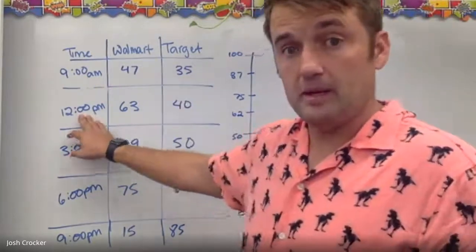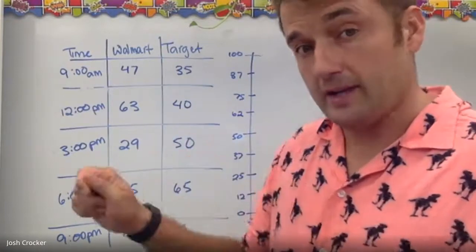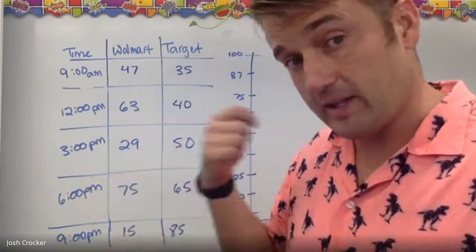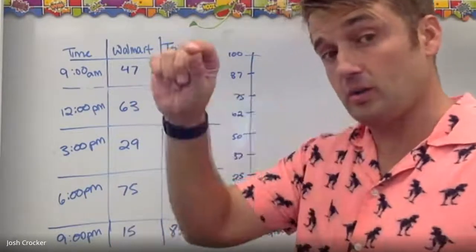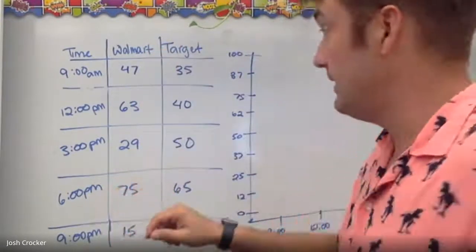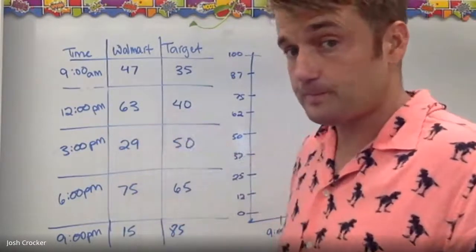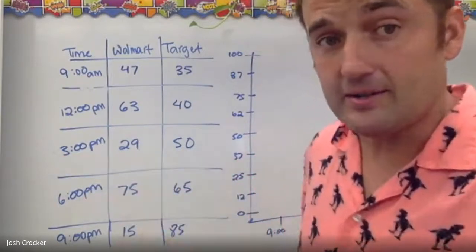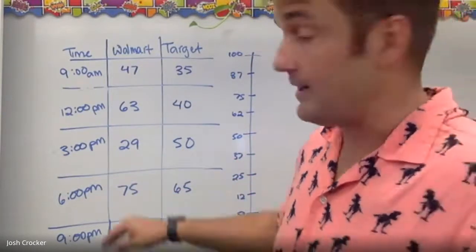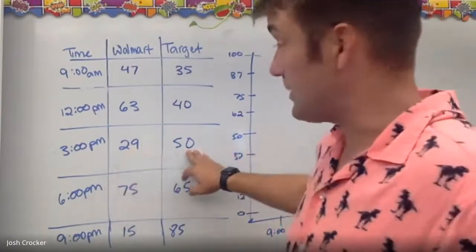Then at noon at 12 o'clock p.m. I went over again and I counted again and so that's going to start to show me a change over time. Are there more cars than there were or are there less? So at Walmart we had 63, at Target 40. Went back at 3 p.m. because I had nothing else to do yesterday, guys. I'm just counting cars. So 29 at Walmart, 50 at Target.